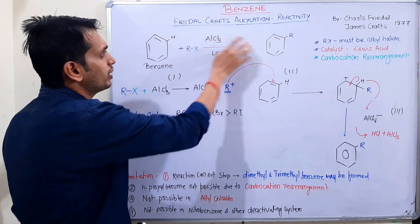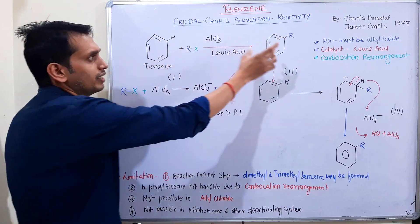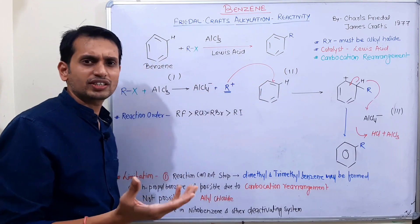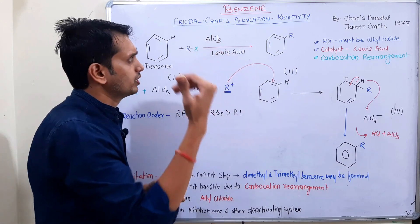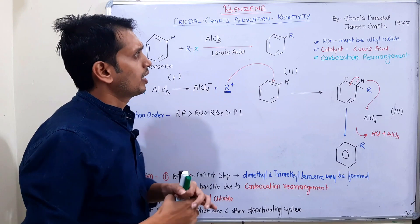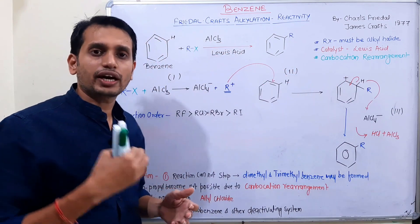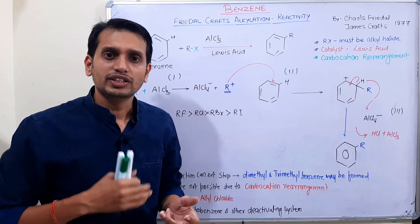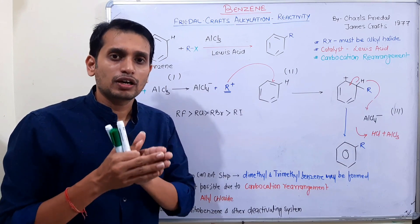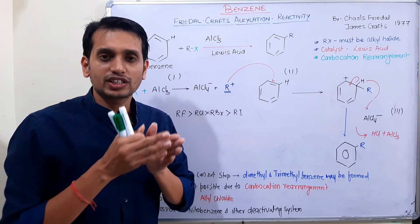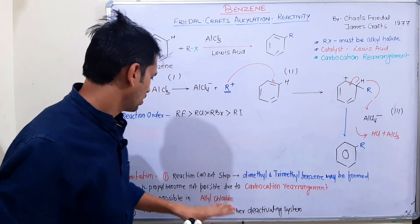Ultimately R group benzene کے ساتھ exchange ہوگا — اور آپ کا methyl benzene یا alkyl benzene بنے گا، چاہے toluene ہو یا ethyl benzene۔ Catalyst کے case میں: AlCl₃ کے علاوہ FeCl₃، zinc chloride، اور BF₃ بھی use کر سکتے ہیں — یہ سب Lewis acid catalysts ہیں۔ ZnCl₂ اور FeCl₃ کی خاص properties ہیں جو ہم آگے discuss کریں گے۔